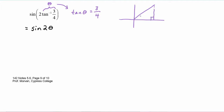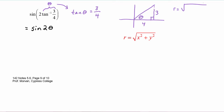Here's theta. We know that tangent is the y value over x, so y is three and x is four. We compute r as the square root of x squared plus y squared — the square root of four squared plus three squared — which is the square root of sixteen plus nine, which is radical twenty-five, which is five.